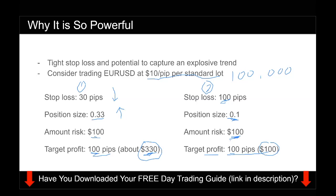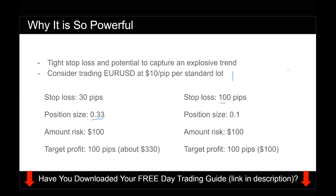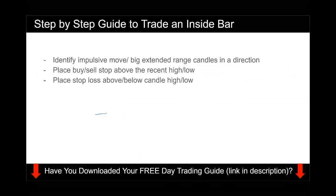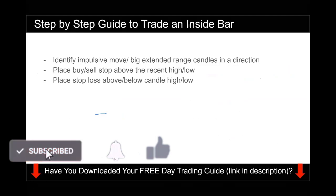That is why this strategy is so powerful — because the inside bar trading strategy allows you to have a very tight stop loss. And since you're trading with the trend, if price really explodes in your direction, you can capture an explosive move with a very small stop loss. That's the potential of this strategy and why it's one of my favorite ways to trade — it gives me the best reward-to-risk ratio.